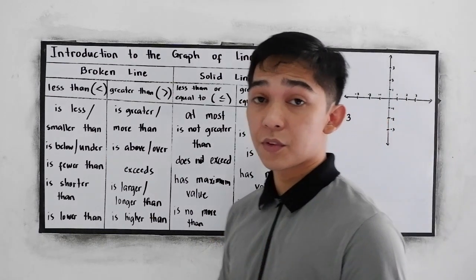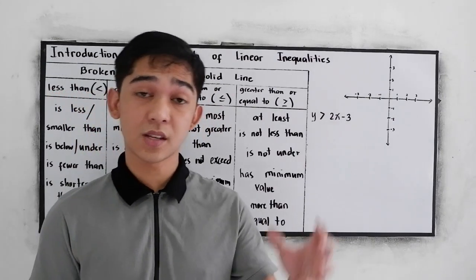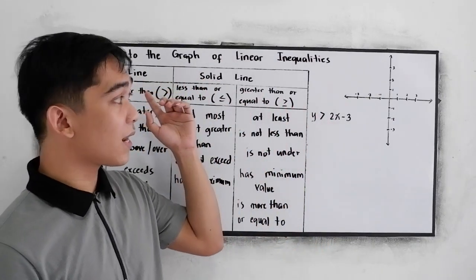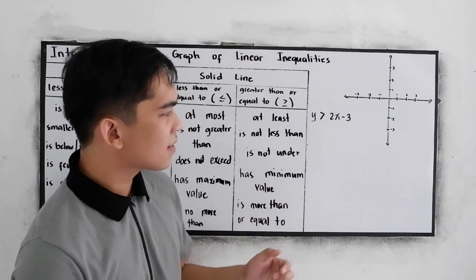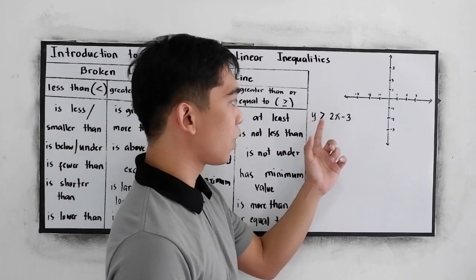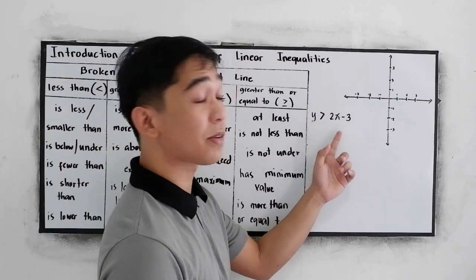Now, in this video, we're going to discuss how to use the broken line and the solid line. Let us graph this example. Y is greater than 2x minus 3.